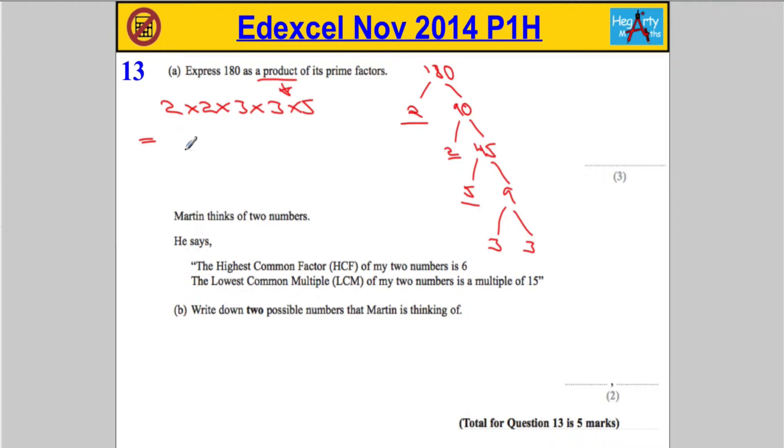Or, you can write it more simply as 2 to the power of 2 times 3 to the power of 2 times 5.